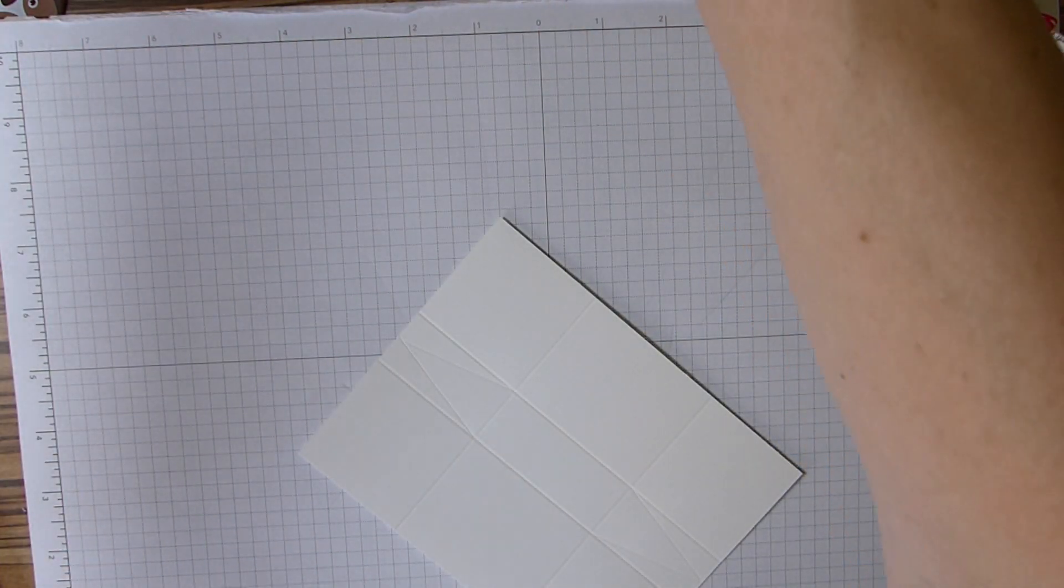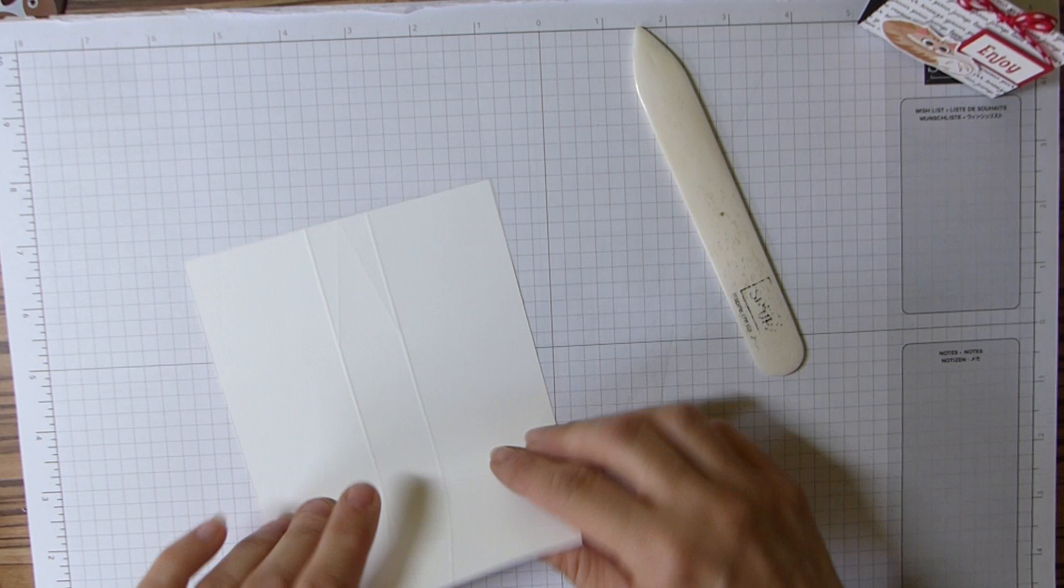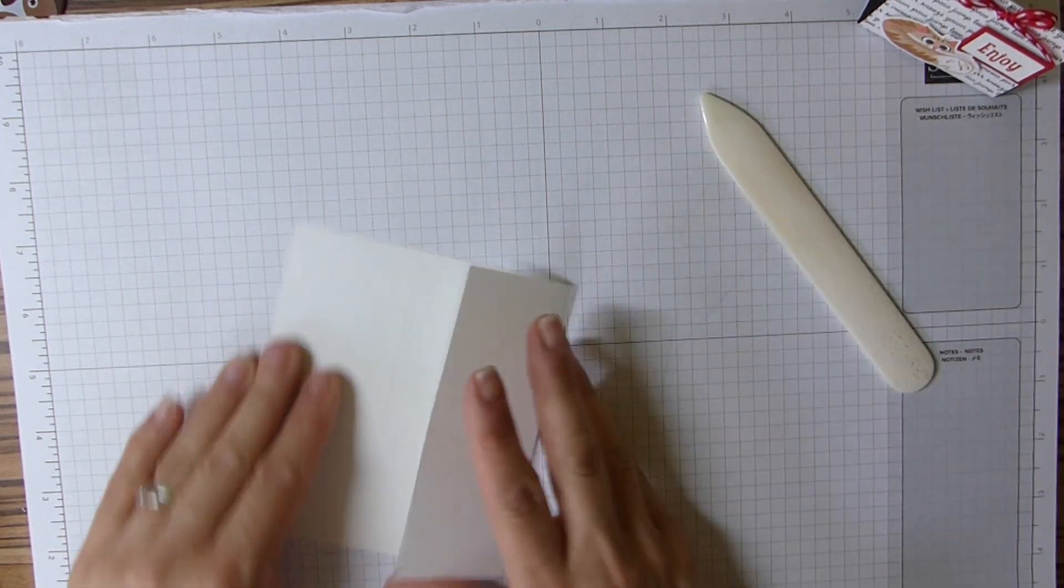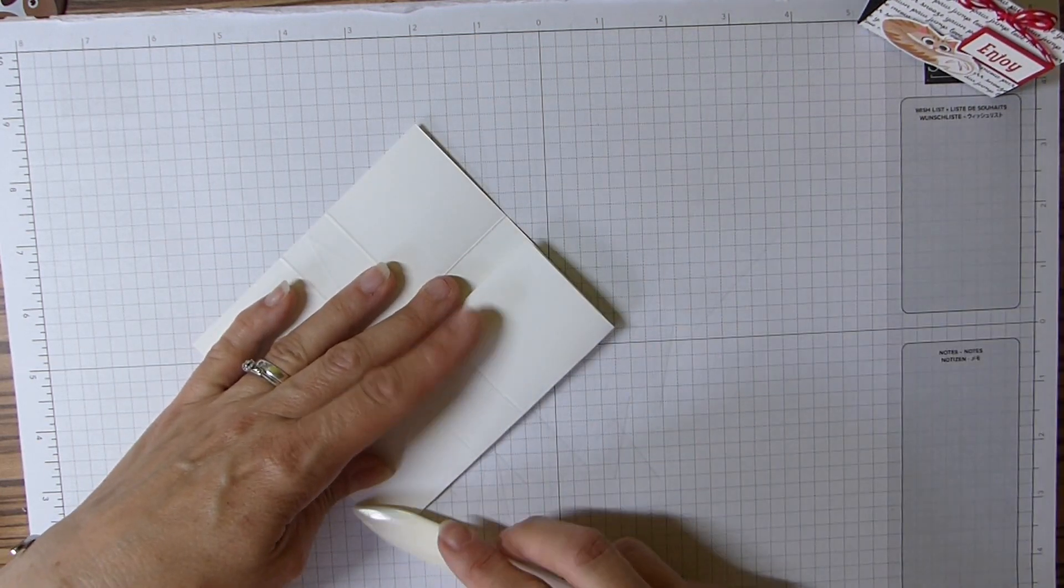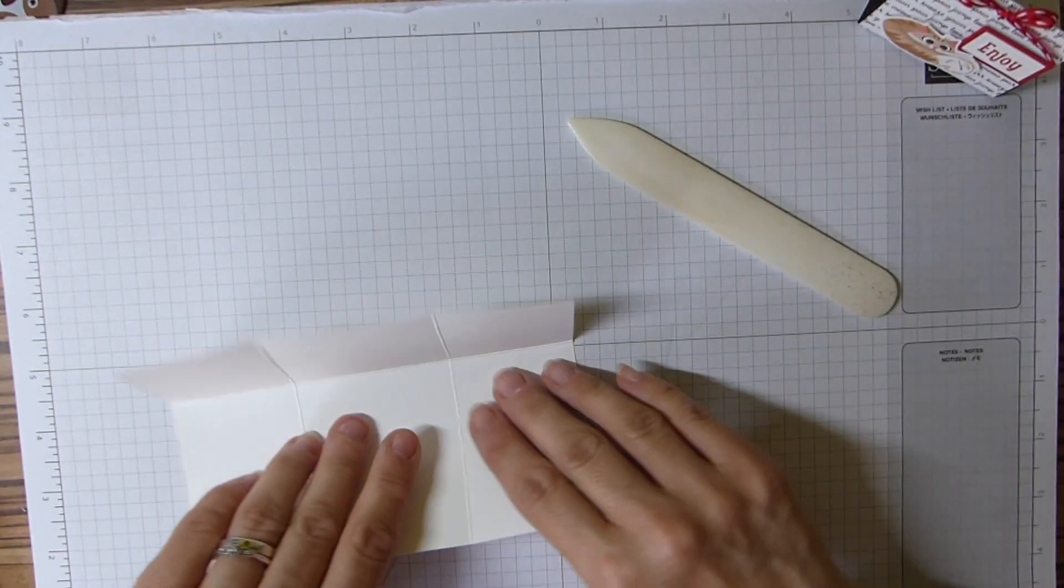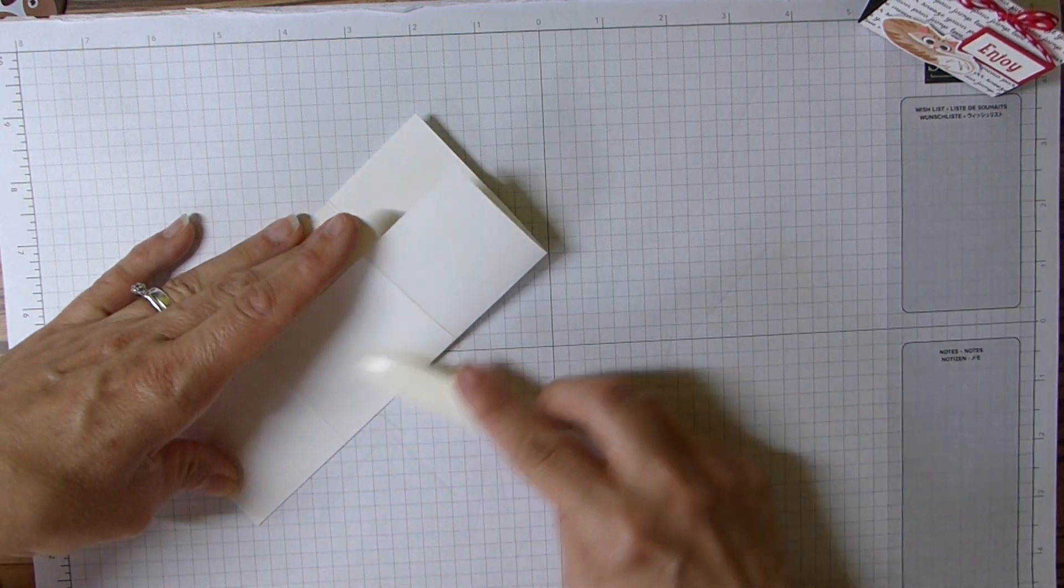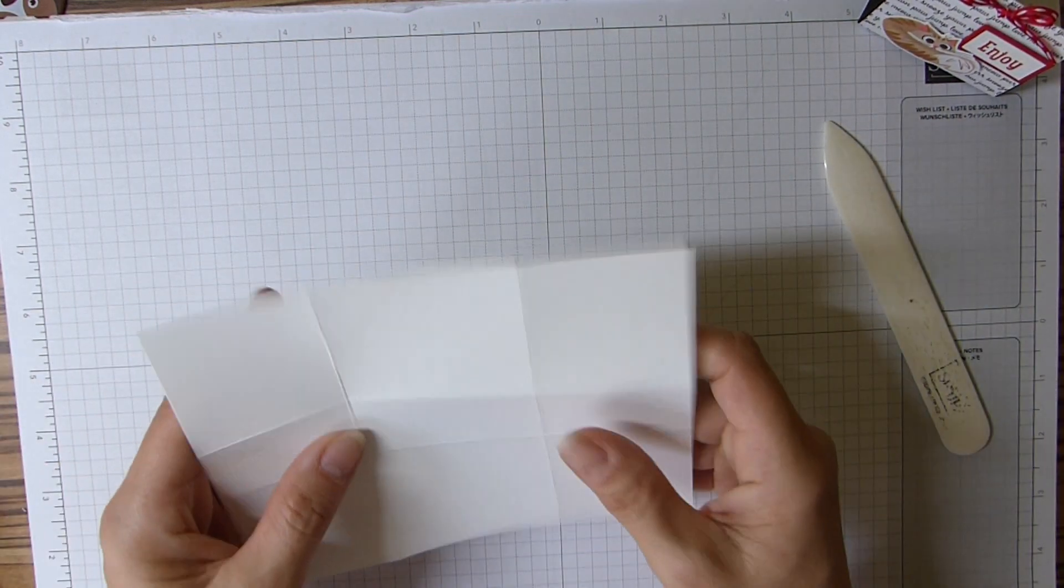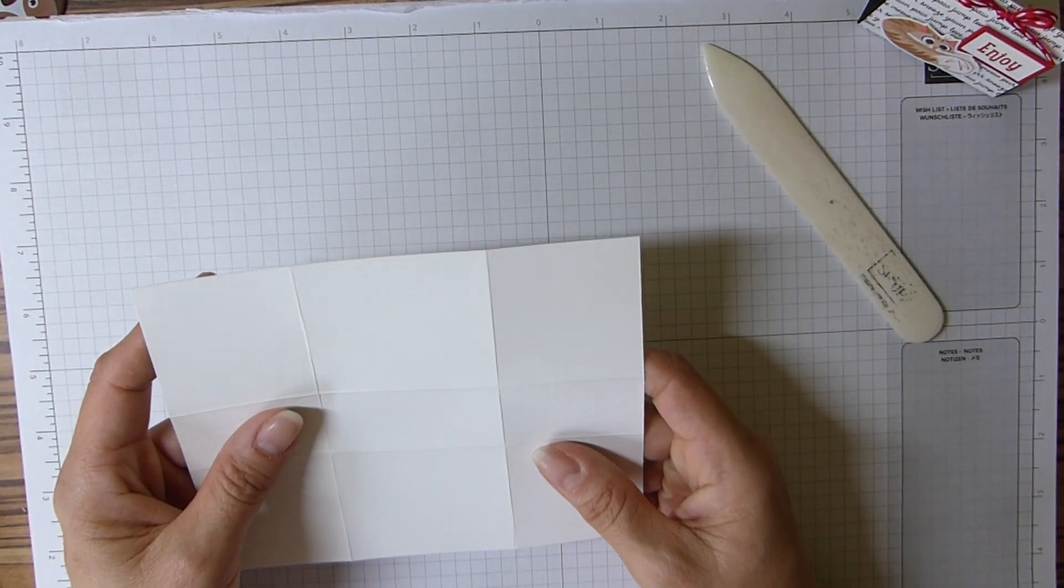Okay, bone folder now just for those four score lines that we made at the start. And then we need to do some cutting.